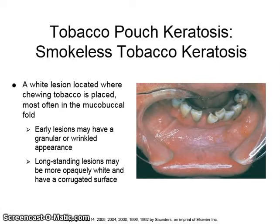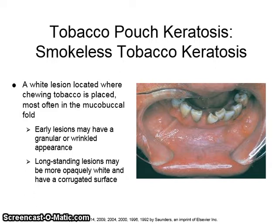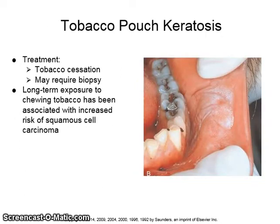Tobacco pouch or smokeless tobacco keratosis is a white lesion located where the chewing tobacco is placed, most often in the mucobuccal fold. Early lesions may have a granular or wrinkled appearance; long-standing lesions may be more opaquely white and have a corrugated surface. Treatment includes tobacco cessation and may require biopsy. Long-term exposure to chewing tobacco has been associated with increased risk of squamous cell carcinoma.